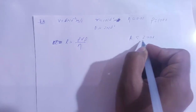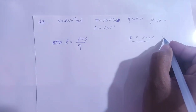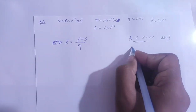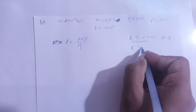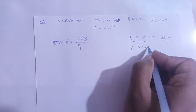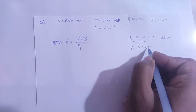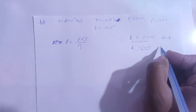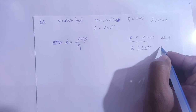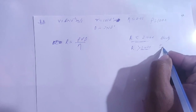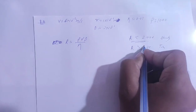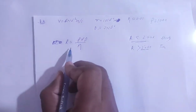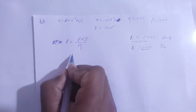If the Reynolds number is less than 2,000, then the flow is steady flow. If the Reynolds number is greater than 3,000, then the flow is turbulent flow. If the Reynolds number falls between 2,000 and 3,000, the flow type is undetermined.